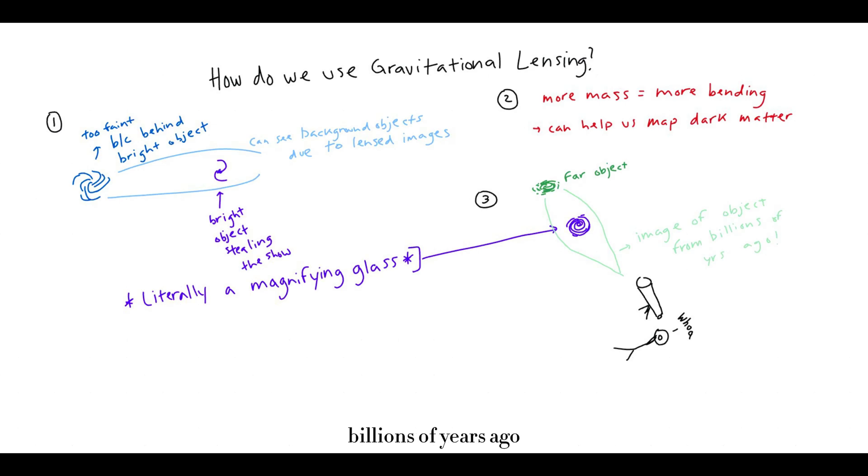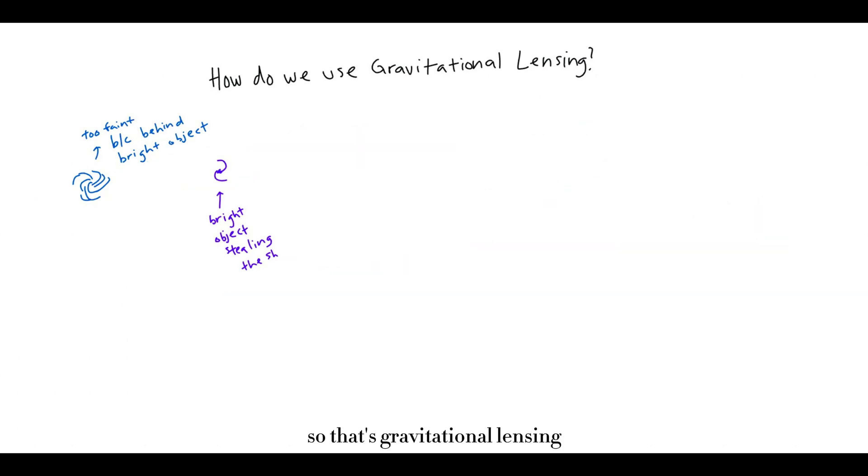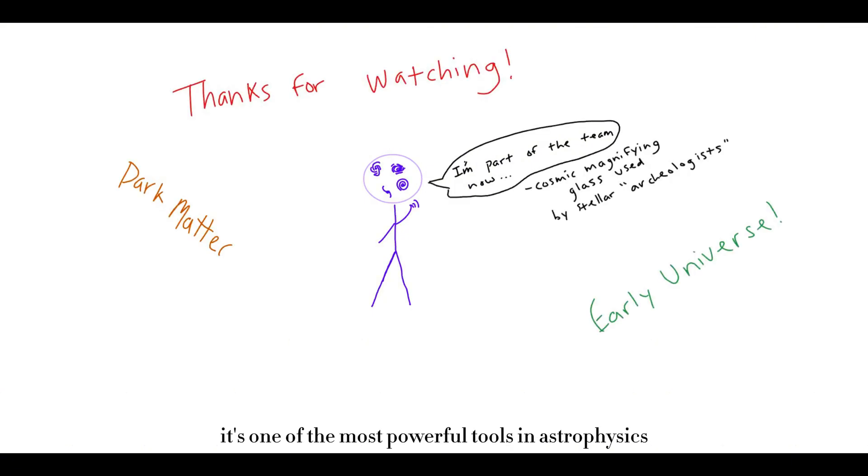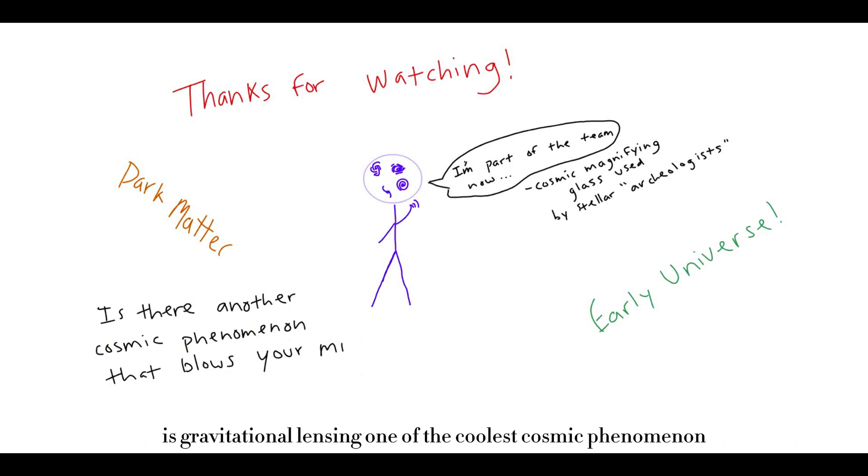So that's gravitational lensing, a natural magnifying glass that's helping us uncover the secrets of the cosmos. From mapping dark matter to studying the early universe, it's one of the most powerful tools in astrophysics. So what do you think? Is gravitational lensing one of the coolest cosmic phenomena, or is there something else that really blows your mind? Let me know in the comments and keep looking out, guys. See you next time.